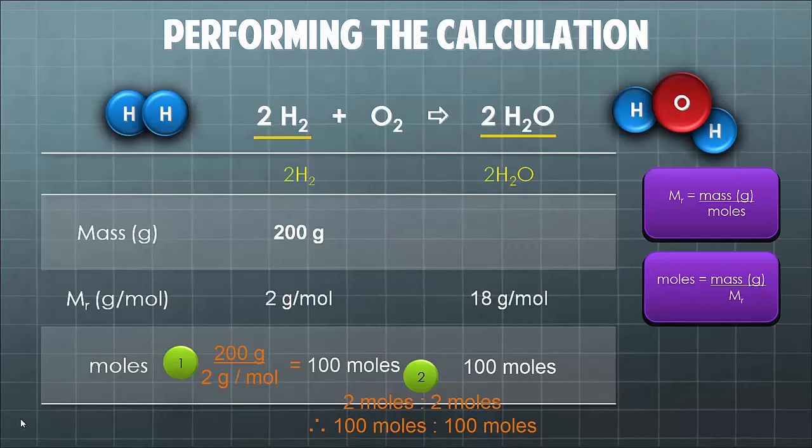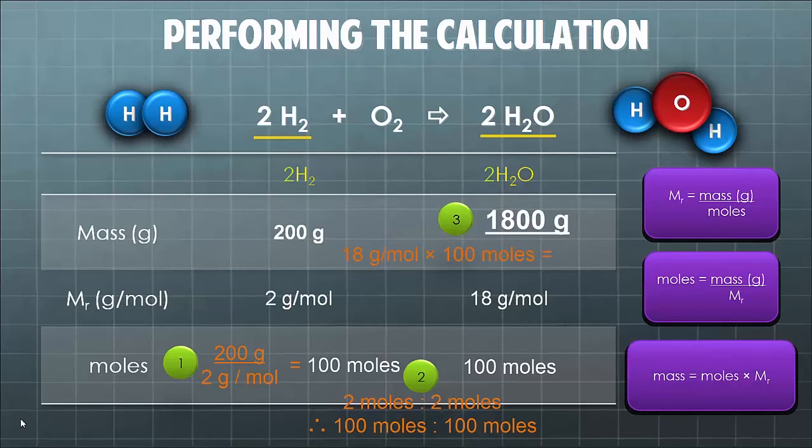Our last step then is to try and fill in the missing gap, which of course here is our mass of water. Now we can rearrange our equation once more and we get mass is equal to moles times MR. That's 18 grams per mole times 100 moles gives us 1800 grams of water. So that's like 1.8 liters or of course 1.8 kilograms.